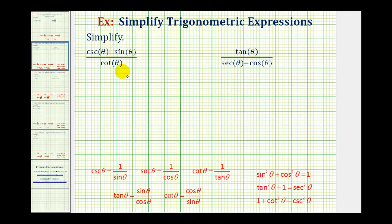We want to simplify the given trig expressions, which normally means we want to write the expression in terms of a single trig function. To do this, we'll be using the identities given here below in red. Since none of the terms are squared, there's no obvious substitution using the Pythagorean identities given here, so what we'll do is convert everything to sines and cosines and then see what we can do with that.